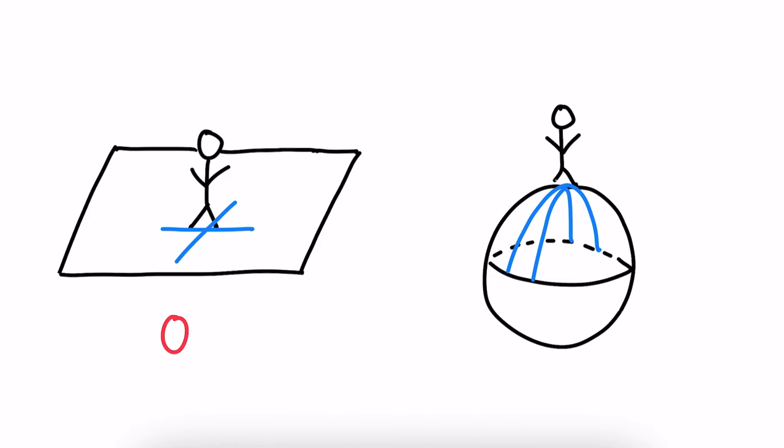If we're standing on a spherical bowling ball, all of the normal curvatures are positive, so the Gaussian curvature is also positive. Now, let's return to the gift wrapping.